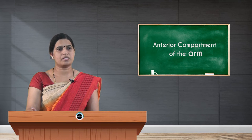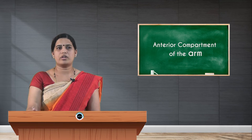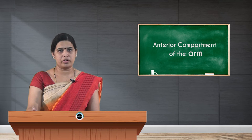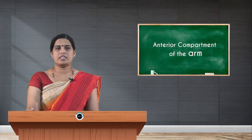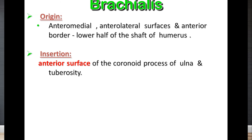The last muscle is brachialis, a deep muscle taking its origin from the anteromedial and anterolateral surfaces of the shaft of the humerus. It forms a tendon, forming the floor of the upper part of the cubital fossa, and inserts medially into the coronoid process of the ulna and also into the ulnar tuberosity. Brachialis has a dual nerve supply: the major medial part of the muscle is supplied by the musculocutaneous nerve.